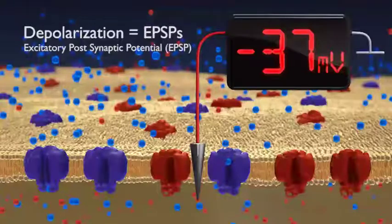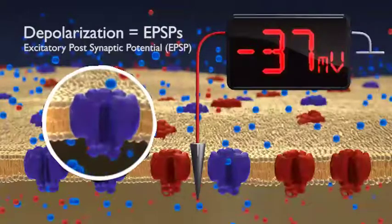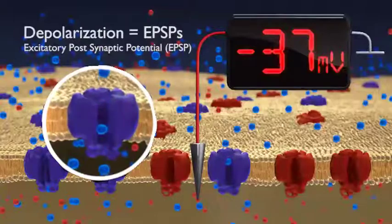The flow of positive ions, such as sodium, into the resting neuron will result in depolarization.